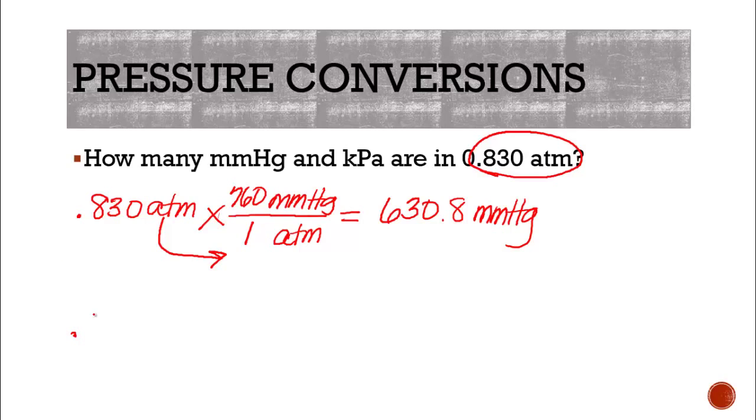So what if we wanted to change it to kilopascals? We still have 0.830 atmospheres, and we're going to times the line. We have 1 atmosphere on bottom again because we want to get rid of atmospheres. So remember, whatever we start with, put it on bottom to cancel it. But this time we're going to change it into kilopascals. So we have 101.325. Now you're going to have to be careful with that point and that comma when you're doing pascals and kilopascals. Always the points with the kilo.